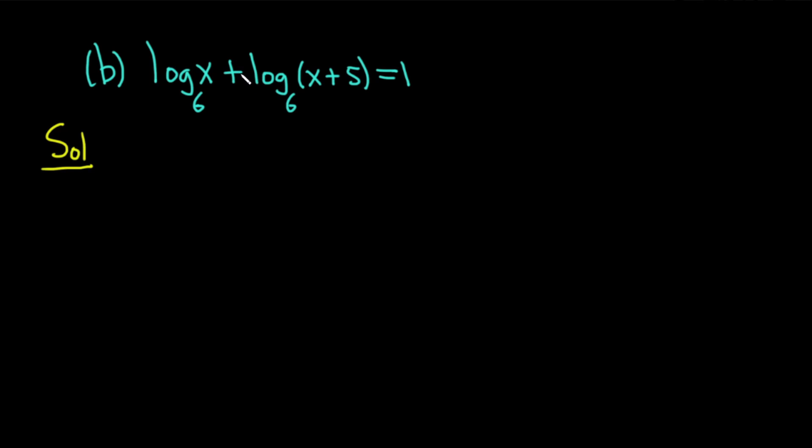You'll notice that we have a plus sign here. Recall there is a rule that basically says if you have log base b of x plus the log base b of y, that's equal to the log base b of x times y. This is called the product rule for logs. So here we're going to combine these logs using this rule. This becomes the log base 6 of x times x plus 5, so x parentheses x plus 5, and that's equal to 1.